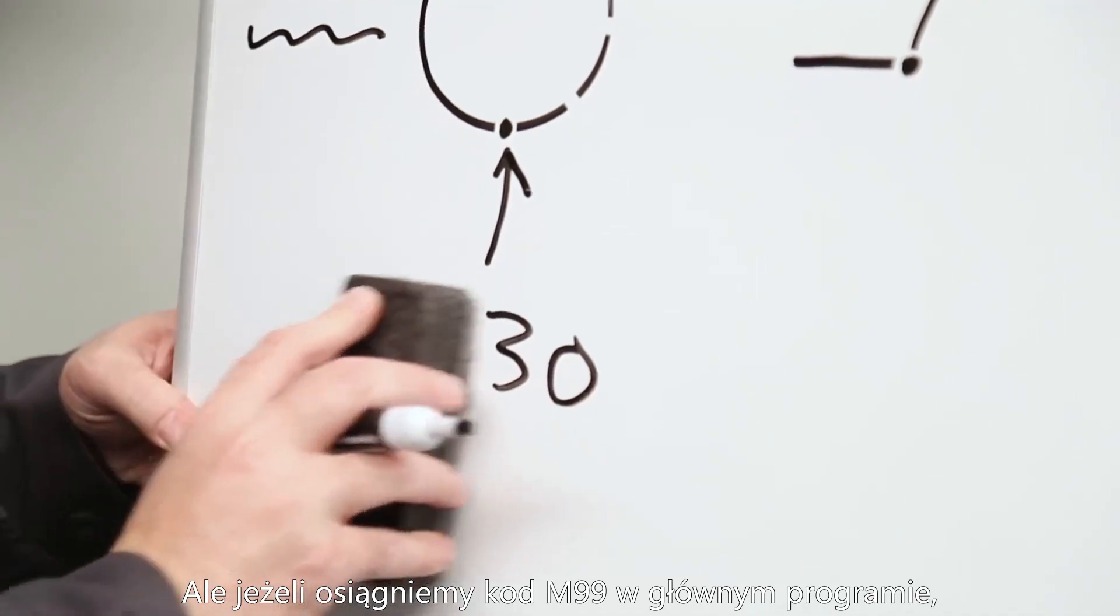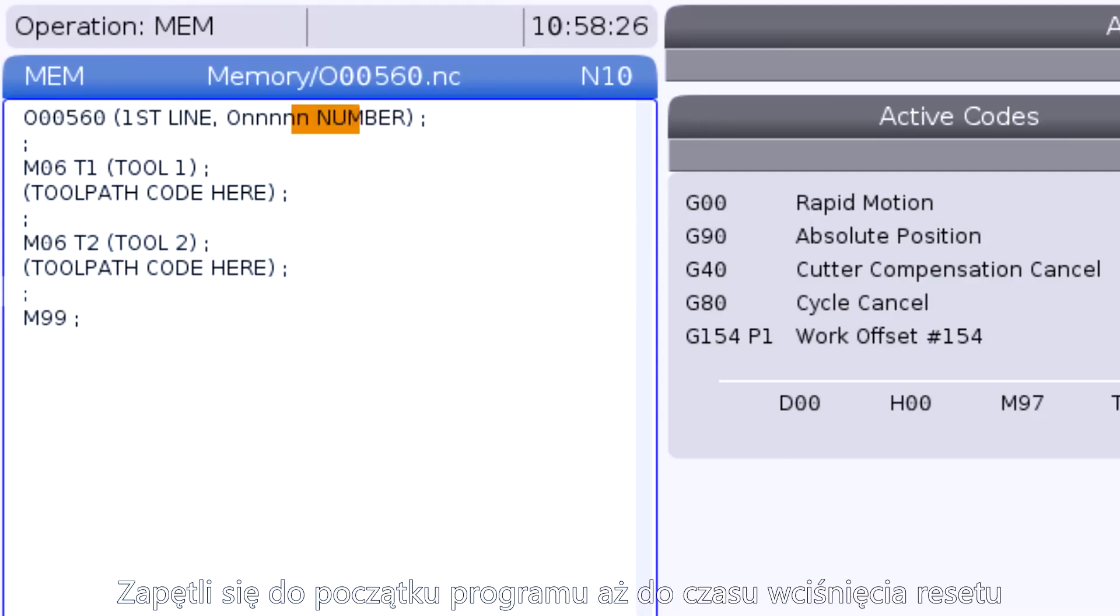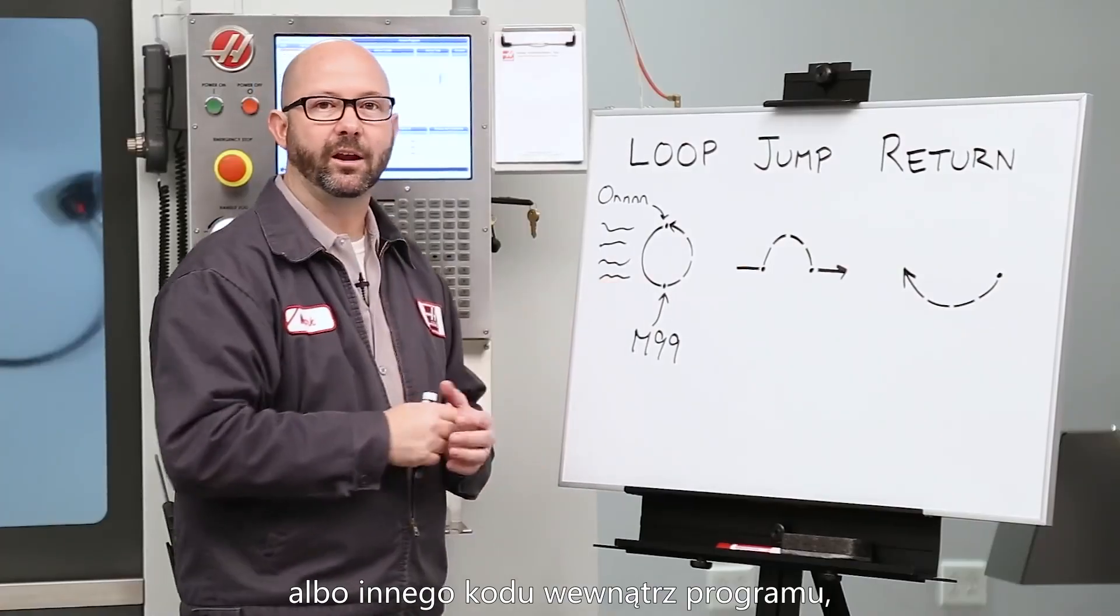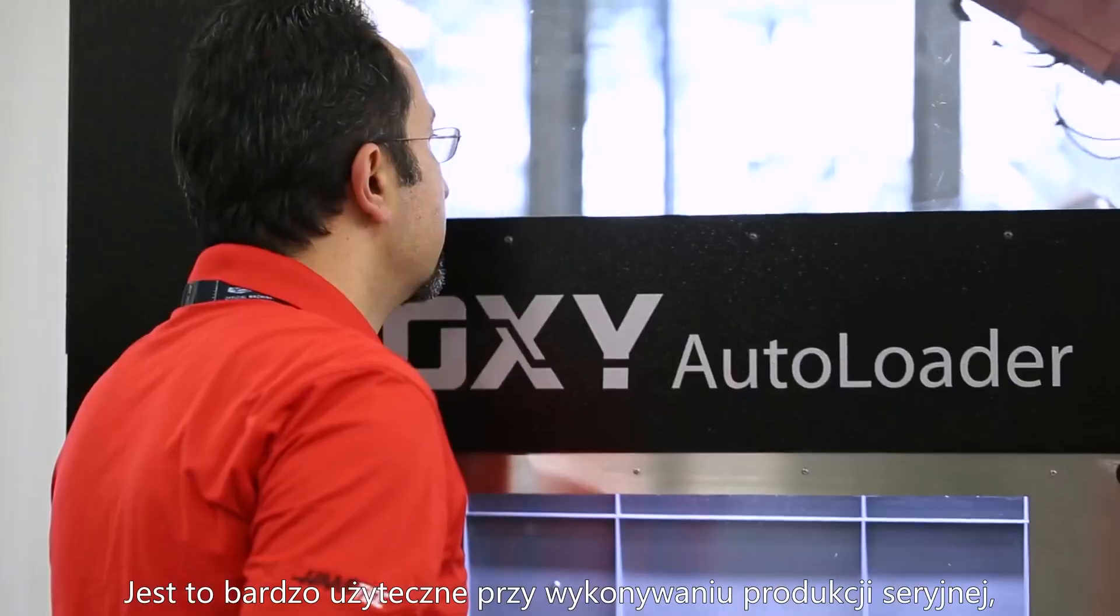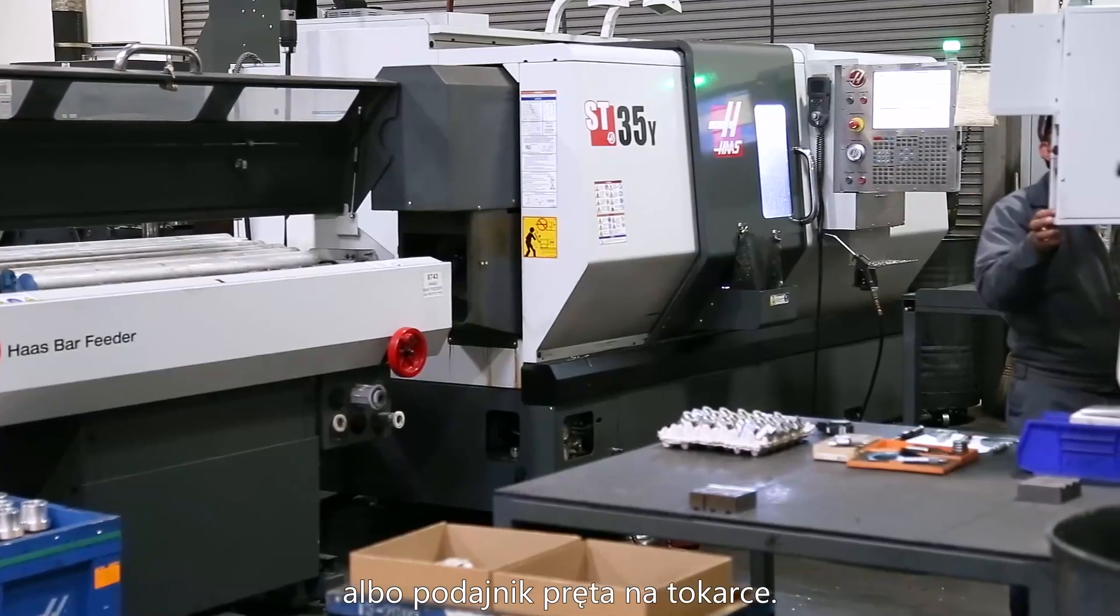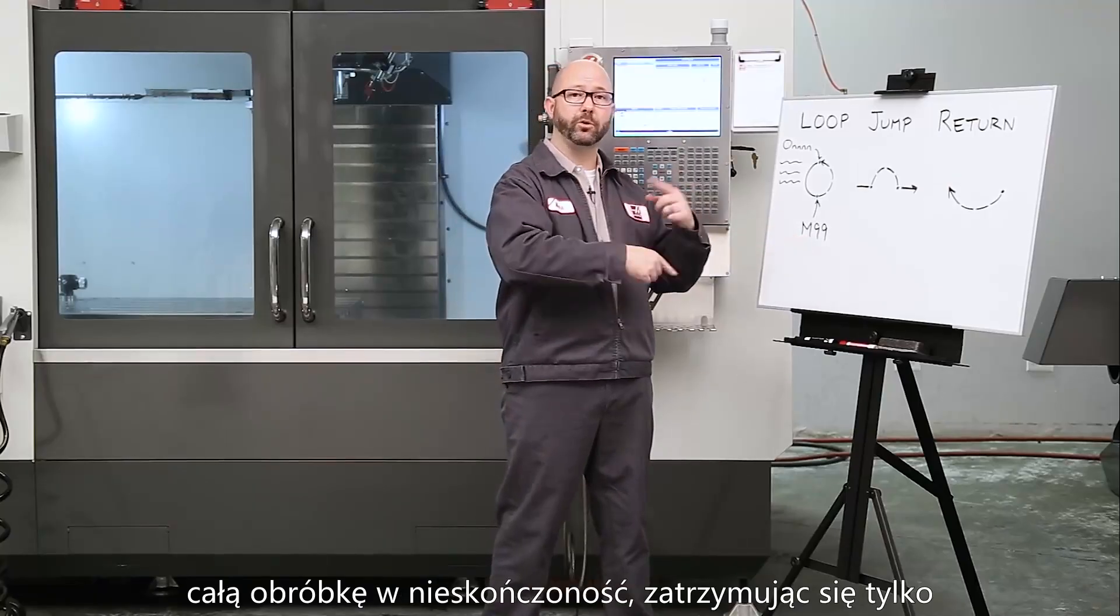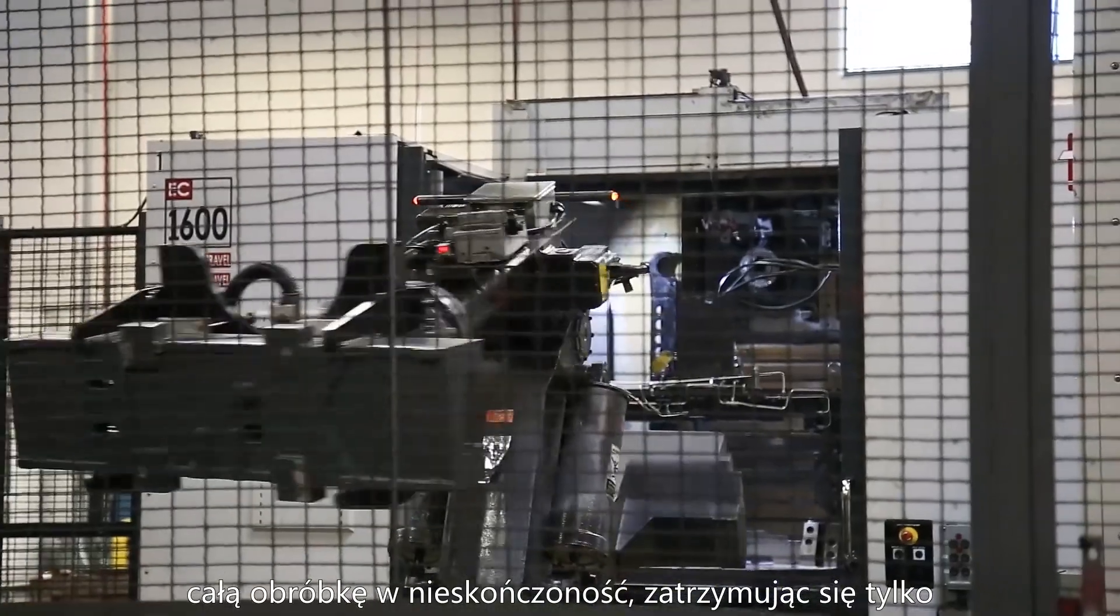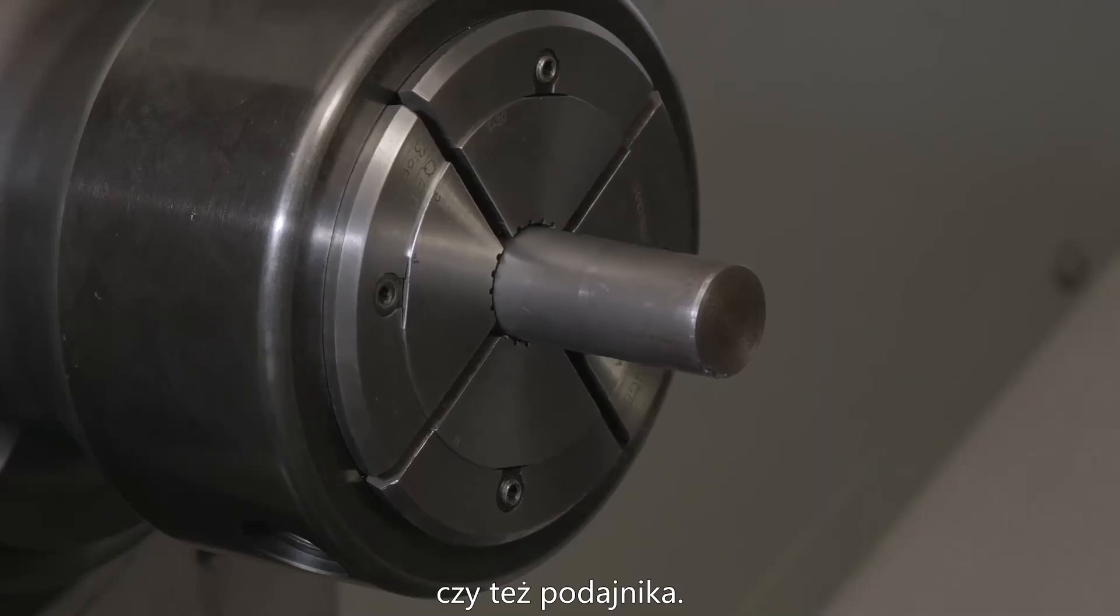If we instead reach an M99 in our main program, the machine will not stop running. It's going to loop forever until you press reset or some other bit of code tells the machine to stop. This is useful when running production parts that are being run automatically. They might be fed by a robot or you might be running a Haas lathe with a bar feeder. In those cases, the M99 will loop your program continuously, stopping only for the robot to do its job or for the bar pusher to push out that bar stock.